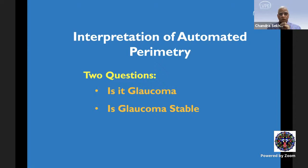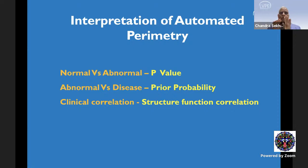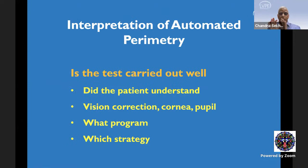To answer whether it is glaucoma or not, we need to answer: has the test been carried out well, and did the patient perform well? Throughout the talk, there are difficult concepts to understand — what is normal versus what is abnormal, which is statistical; and what is abnormal versus what is disease, which is clinical. I will also talk about p-values and prior probability. Those two are a little heavy — when I get there, I'll ask you to pay a little more attention.